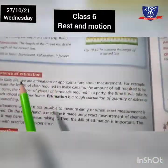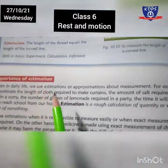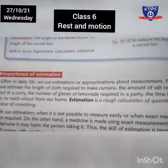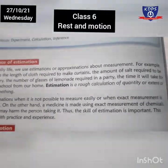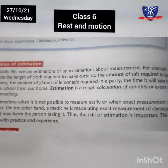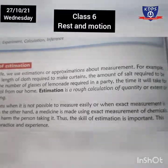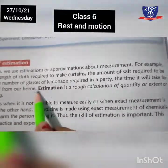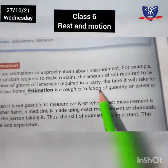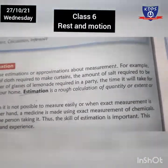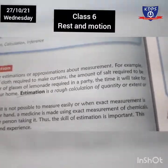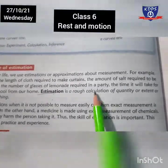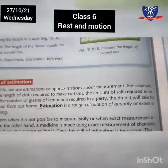The next topic is the importance of estimation. Estimation is when we make a rough assumption — for example, if we need a piece of cloth and we think we need about 1 meter, we are making an assumption. That is estimation. Estimation is a rough calculation; it is not an accurate calculation.